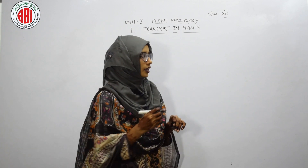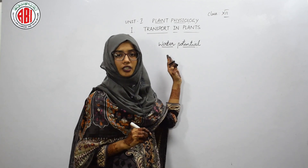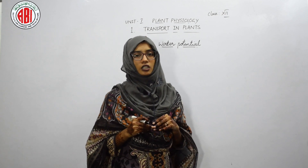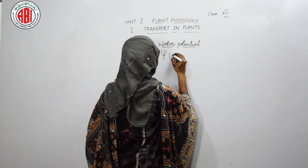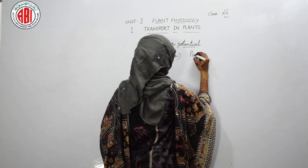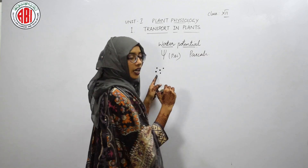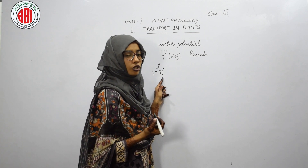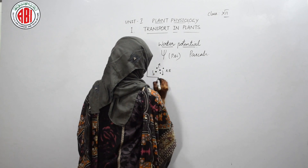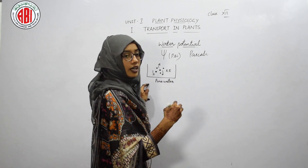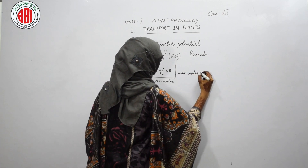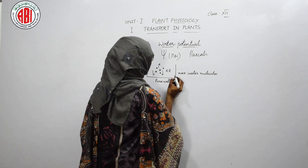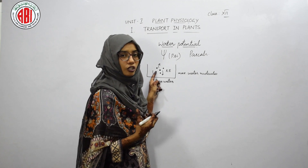The next topic is water potential — an important term in the study of transport in plants. Water potential is the potential of water molecules to do work, represented by the symbol psi (ψ), measured in pascals. When we observe water molecules in a medium, they move randomly in different directions and have kinetic energy. In pure water, the maximum number of water molecules are present, so the energy possessed by the water molecules is also maximum.